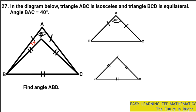To find angle ABD, we are first going to find the angles of each triangle. Let's start with triangle ABC. One angle is given and we are told it is an isosceles triangle. Let me first state the property of an isosceles triangle that we're going to use to help us find the other angles. Let me name the two unknown angles as angle X and angle Y.